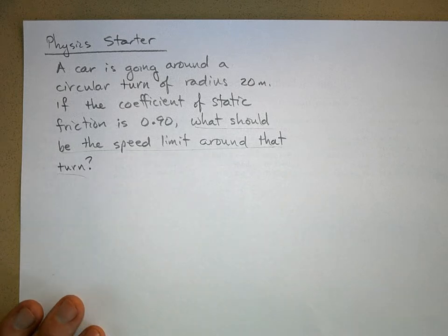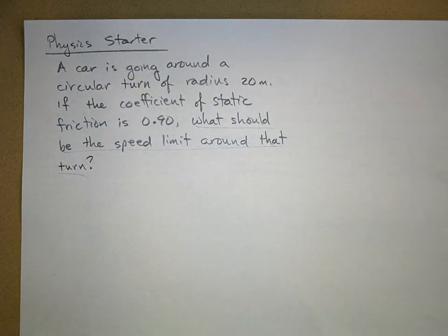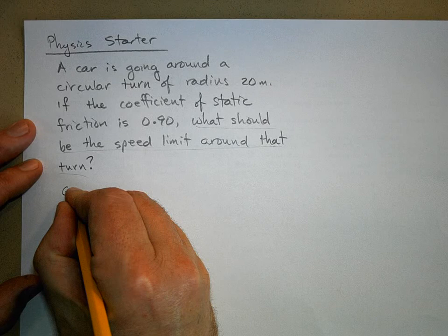But we can at least figure out what the maximum possible velocity is before we skid off the road, and then from that we can decide what kind of speed limit we want to make. So let's write out what's given.